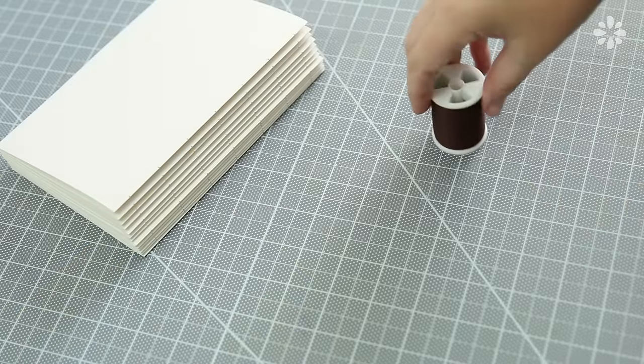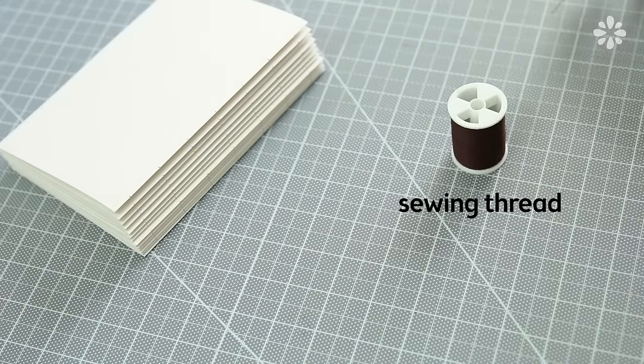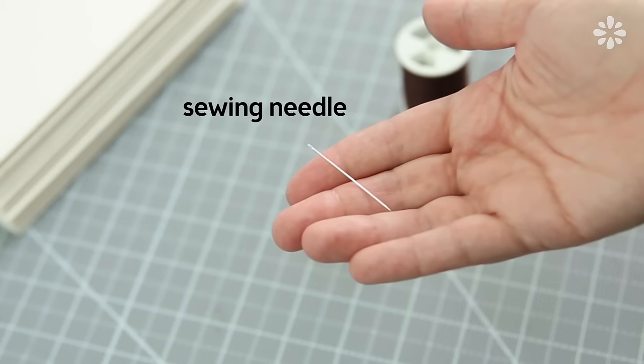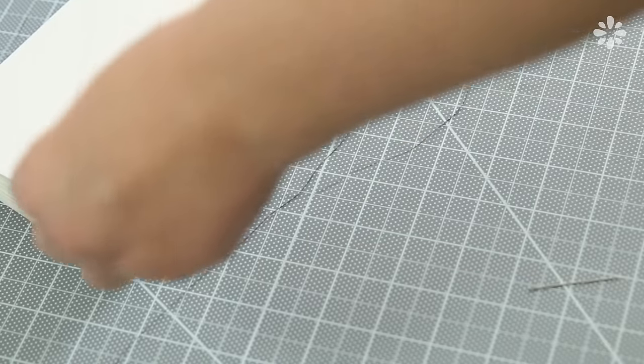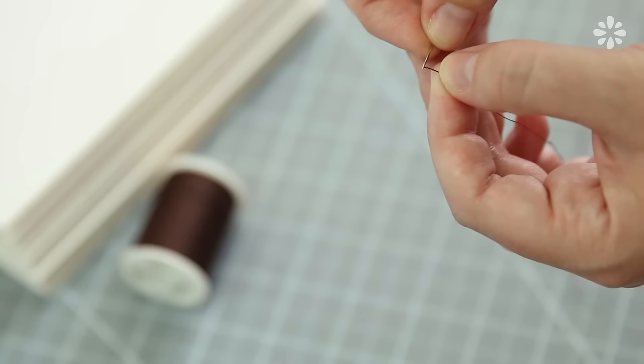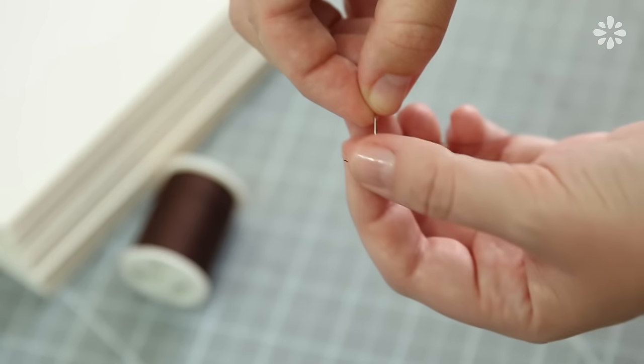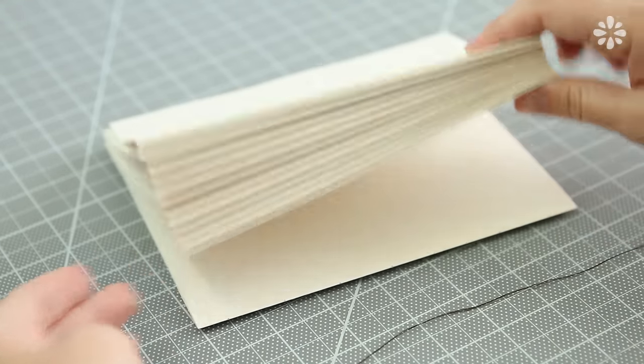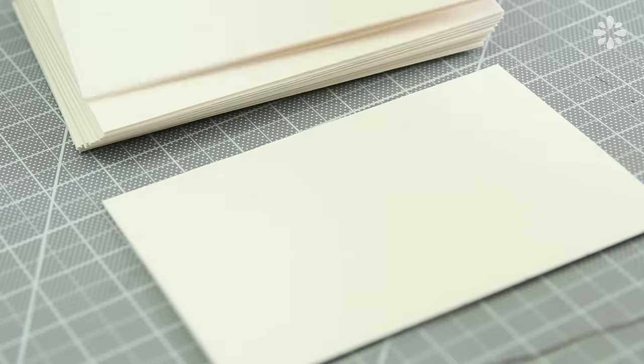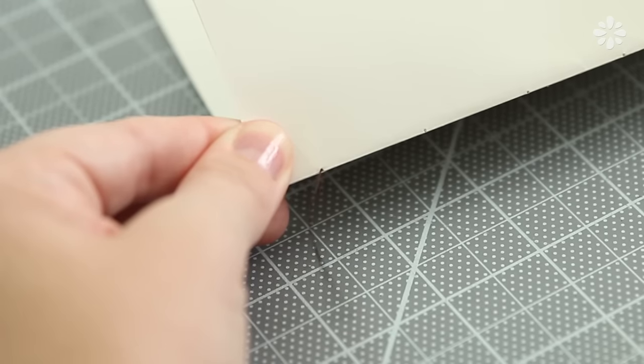And now for the stitching portion. I'm using regular standard sewing thread and a standard sewing needle. Double thread your needle. I usually like to work with two feet at a time, otherwise the thread gets tangled and hard to manage. Tie a knot on the end. Start with the bottom signature and make sure you keep the rest of the signatures in the order that you marked them.